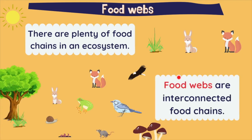Food webs are interconnected food chains. In an ecosystem, all the food chains interconnected make the food web. For example, here we have a food chain starting always with the sun. The rabbit takes the food and the energy, then the fox eats the rabbit, and the eagle eats the fox.